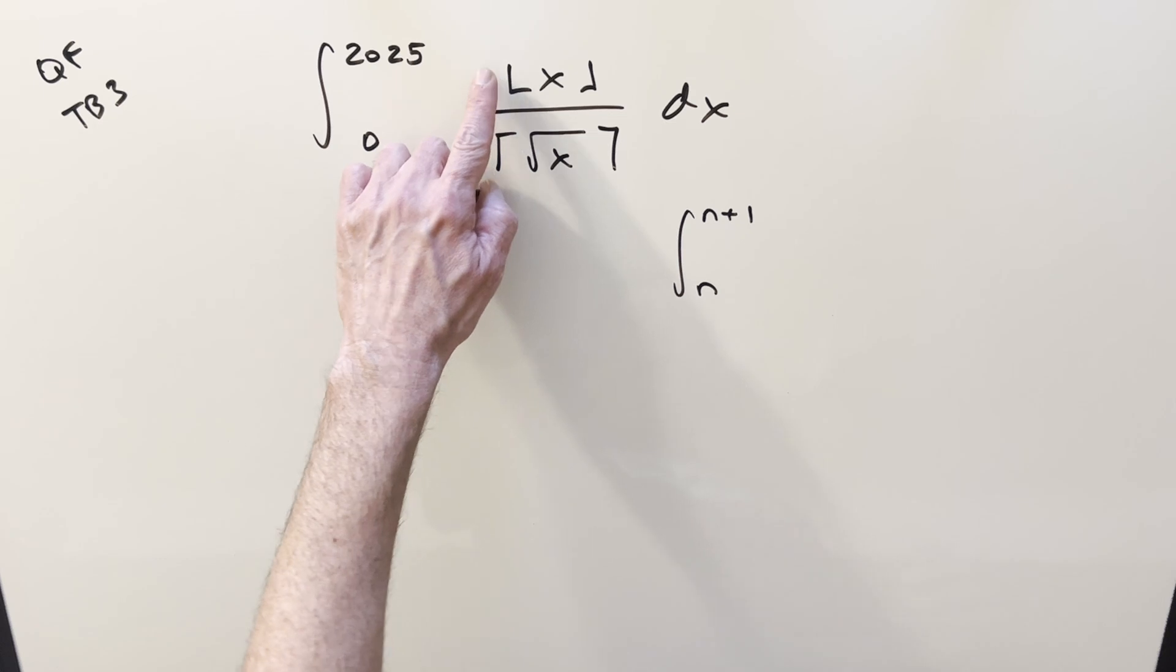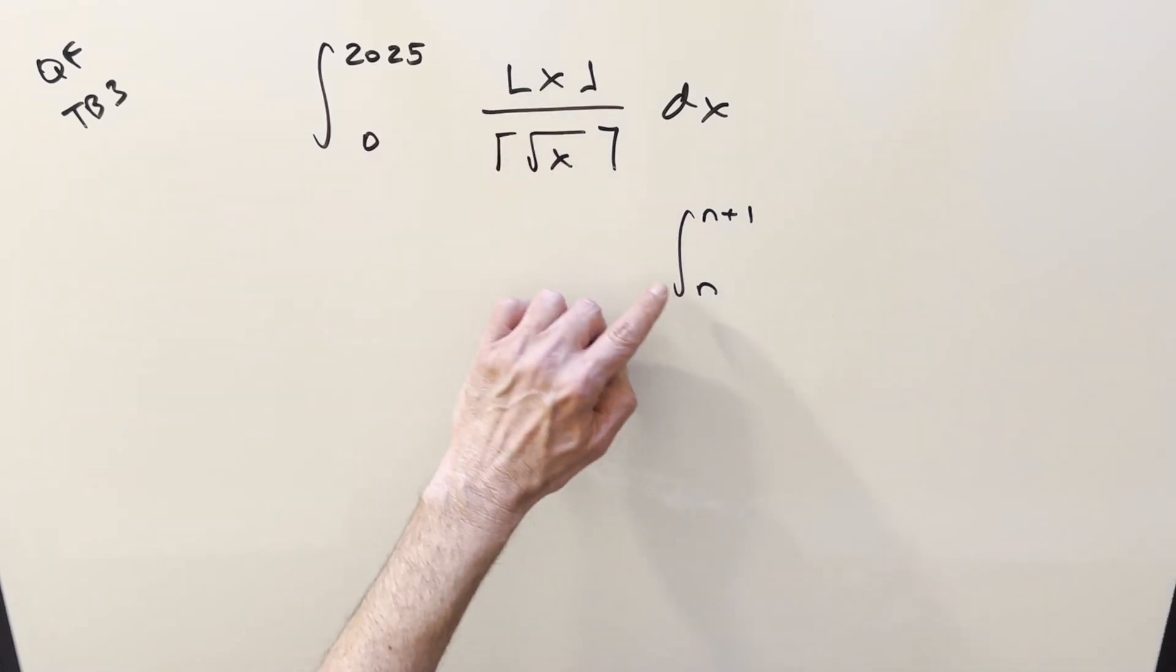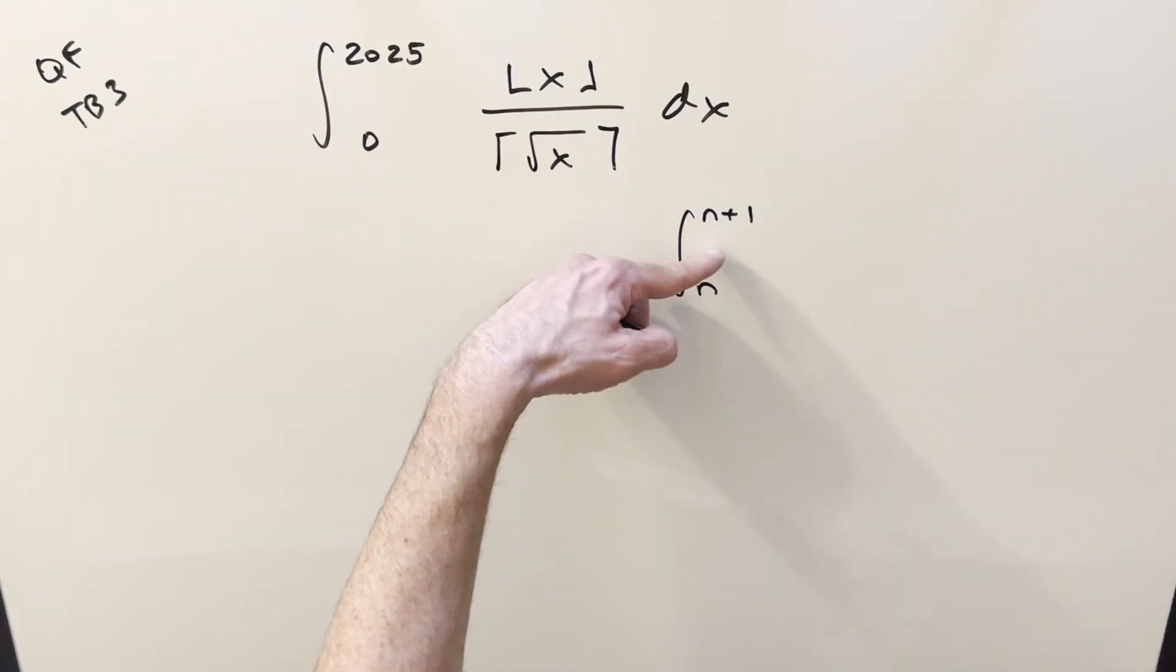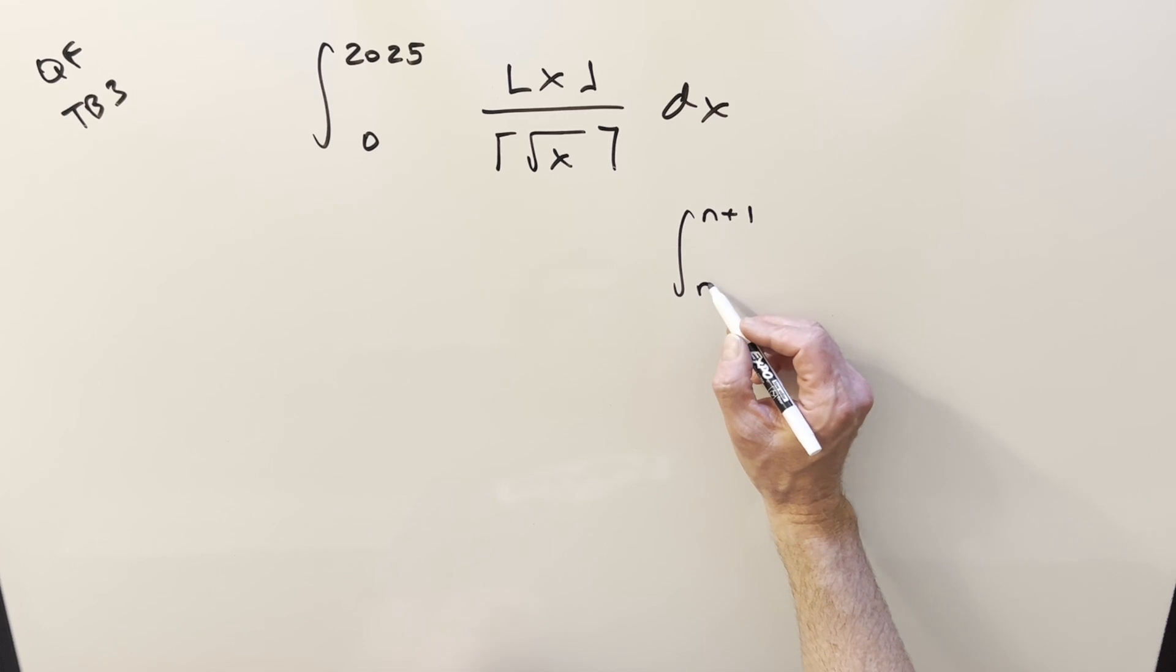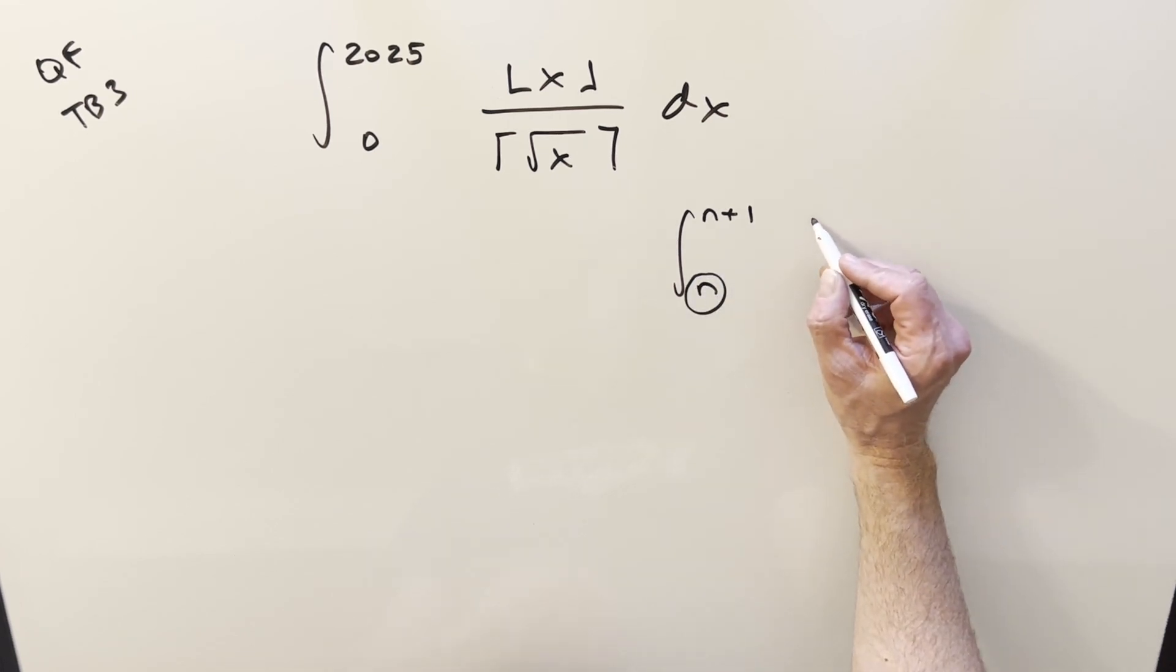The floor function's going to round us down. So if we're looking at x values between n and n plus one, the floor's going to round us down to this lower value. And so the numerator's always going to be n. Now, for this denominator, of course, it's going to be more complicated.